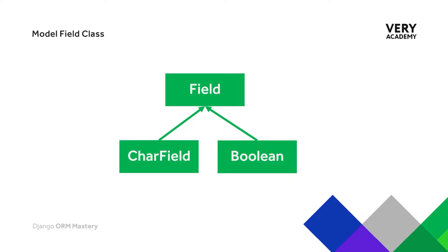Inheritance is a concept in object-oriented programming in which a class — in this case character field and boolean — inherits all of the attributes and behaviors defined in the field class. When you consider there are around 30 different built-in Django field types, there's a lot of similar information across those fields, such as the name and description. So there's no need to write that out in every single field; we can just inherit all of those attributes from a single class. All built-in Django fields inherit these common attributes and methods from the field class.